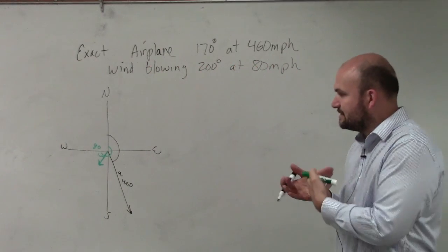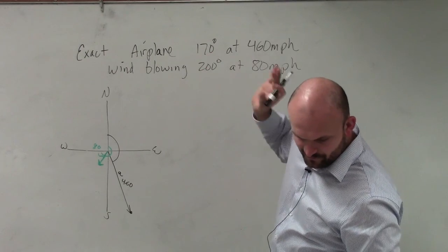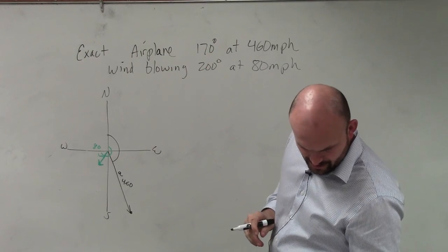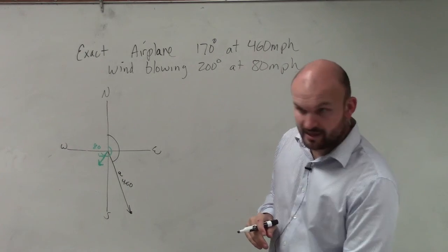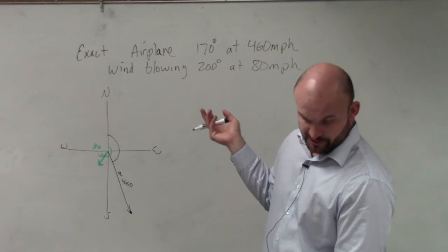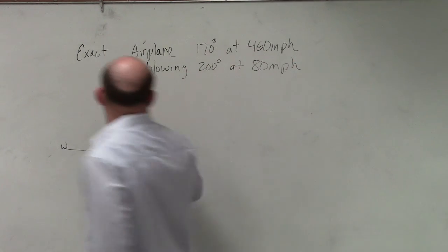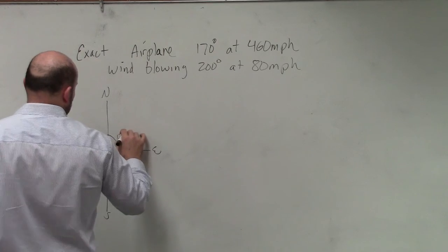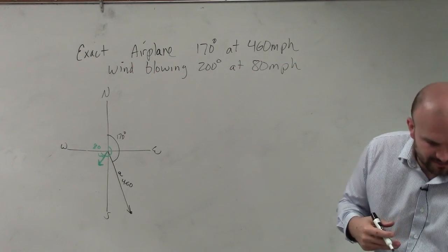Now, basically what they're asking us to do is, given this information, first, find the component form of the velocity of the airplane, which was the exact same question as 42, right? So as long as you did 42, you could do 44. So if we look at this, we have A, which is here's 170. We need to find the component form of this. Well, here's the big issue.